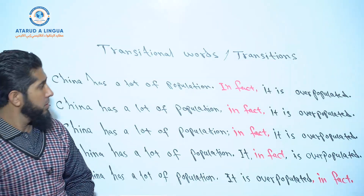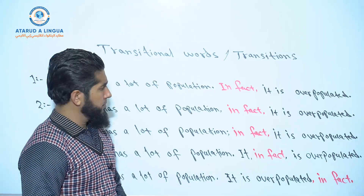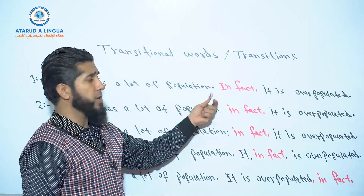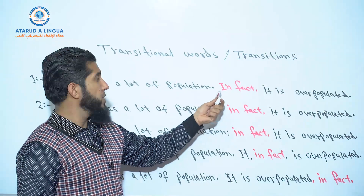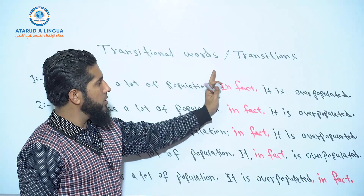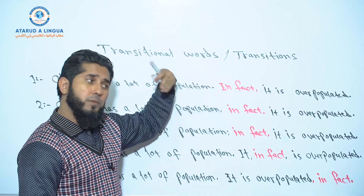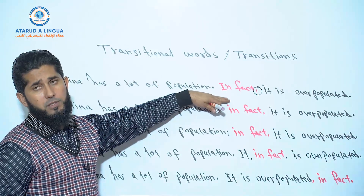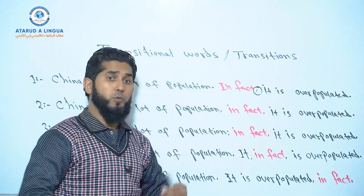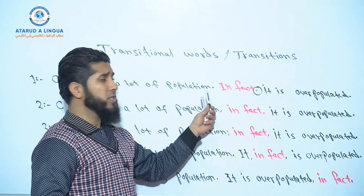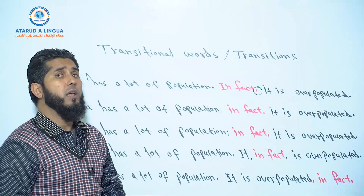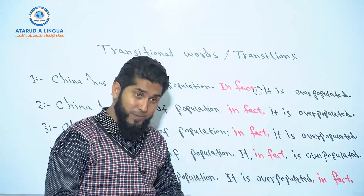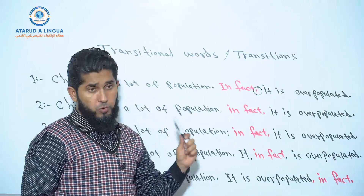If you pay attention to all of these sentences, the transitional word 'in fact' is used in five different ways. The first way: you use a full stop or period at the end of your first sentence, and then you use the transitional word at the beginning of your next sentence, followed by one comma. The transitional word should be capitalized because there's a full stop starting the second sentence. Transitional words cannot be used in your first sentence — they are always used in the second sentence. That is the first way. The second way: instead of a full stop, you may use a comma, and then after the transitional word there's another comma — but in this case it does not have to be capitalized. The third way: you may use a semicolon instead of a comma, again with no capitalization and still one comma after the transitional word.